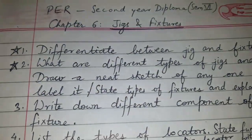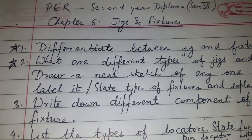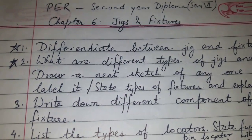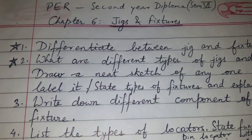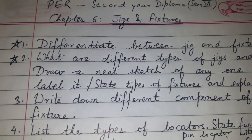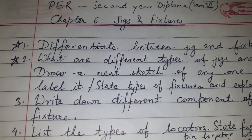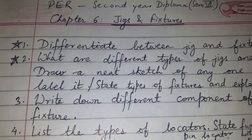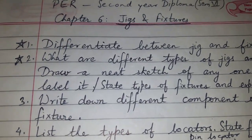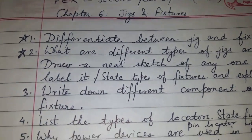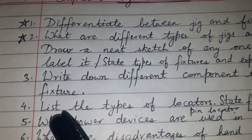Hi friends, today's topic of discussion is Chapter Number Six: Jigs and Fixtures, for the subject PER — that is Production Engineering and Robotics — for second year diploma semester six.